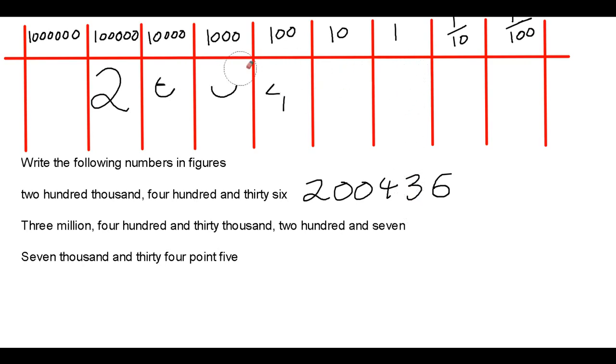Next, I want to write 3,430,207 in figures. To do that, I'm going to write 3 in the millions column. I have 430,000. There's 4 hundreds of thousands. There are 3 tens of thousands, 2 hundreds and 7 units.